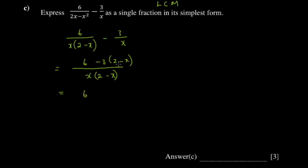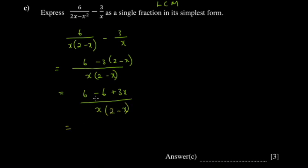You have to expand, so negative 3 multiplied by 2 gives negative 6, then negative 3 multiplied by negative x gives positive 3x. This is all divided by x(2 minus x). So 6 minus 6 simply gives 0 - that term disappears - leaving 3x divided by x(2 minus x).